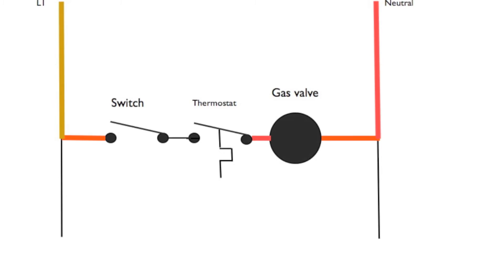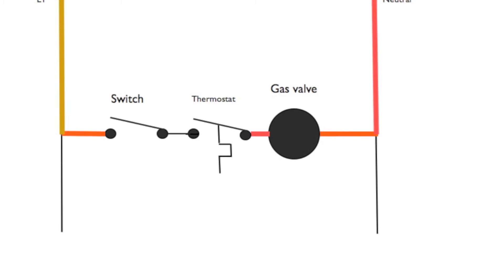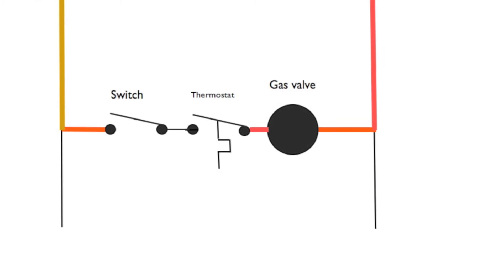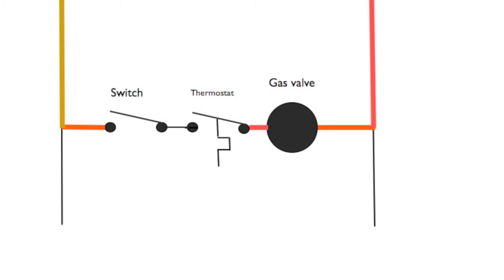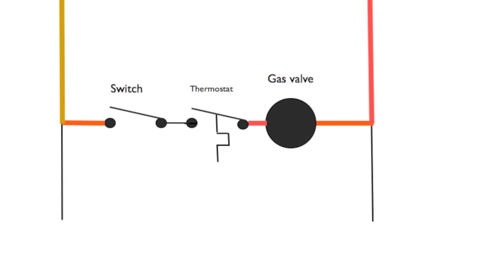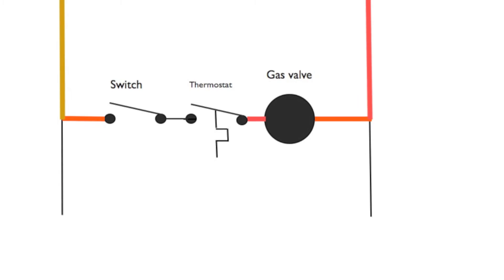This is what's called series switching. Usually, not always, but usually control switches are wired in series. I'll do another video that shows wiring in parallel, and you can tell the difference.